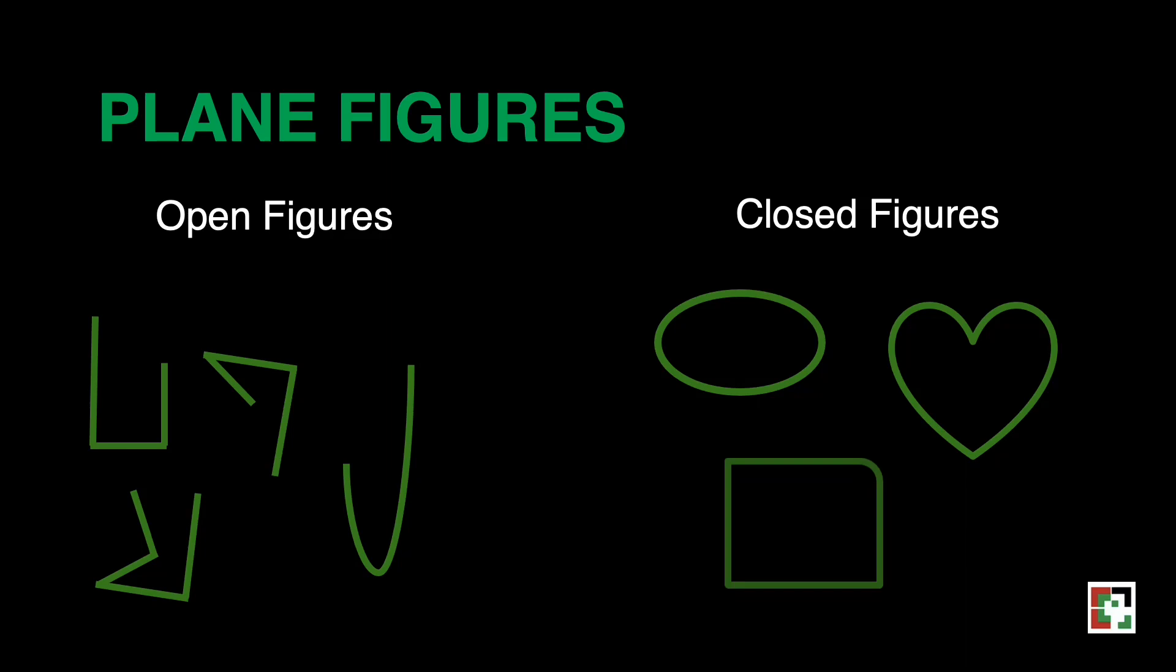Closed figure has no break. The line segments or curves are continuous, forming a closed shape. A closed figure has an area and perimeter. Closed figures or polygons are bounded by line segments. These line segments are its sides and the end points of the sides of a polygon are its vertices.